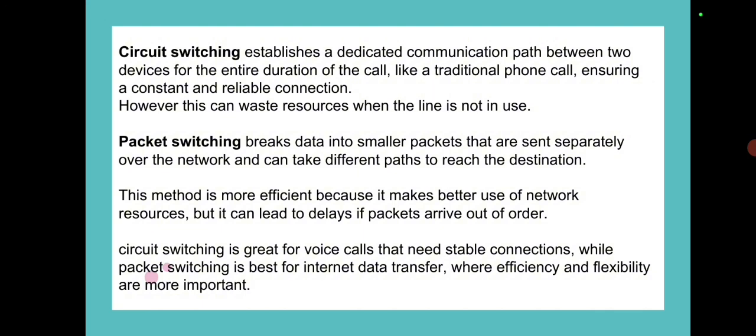Packet switching basically divides data into small packets. From the sending side, packets are separately distributed and sent across the network. On the receiving side, the packets are reassembled at the destination. This method is more efficient because it makes better use of network resources, but it can lead to delays if packets arrive out of order.